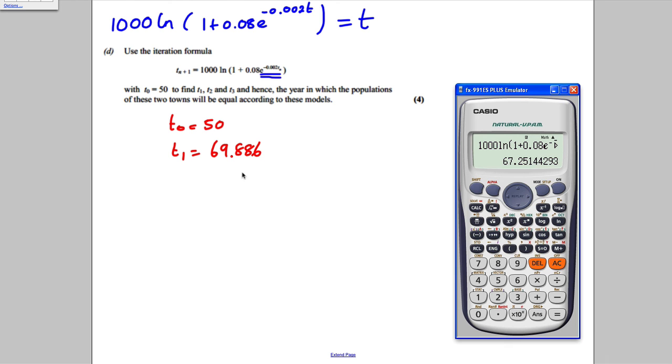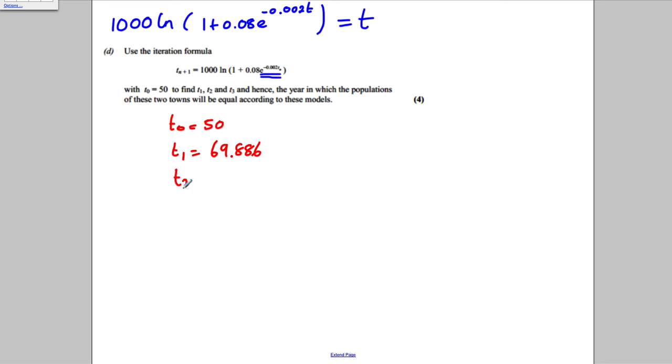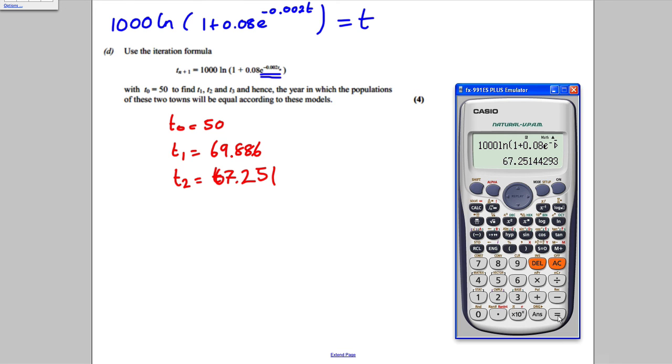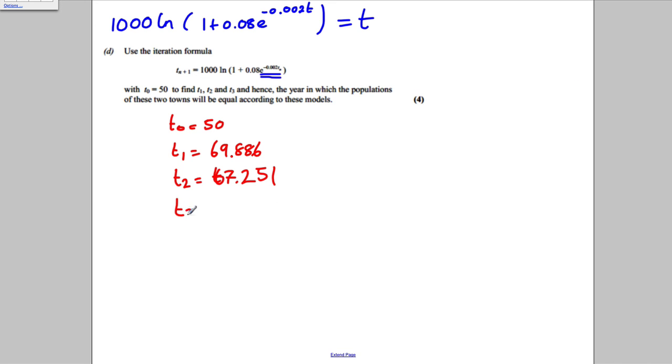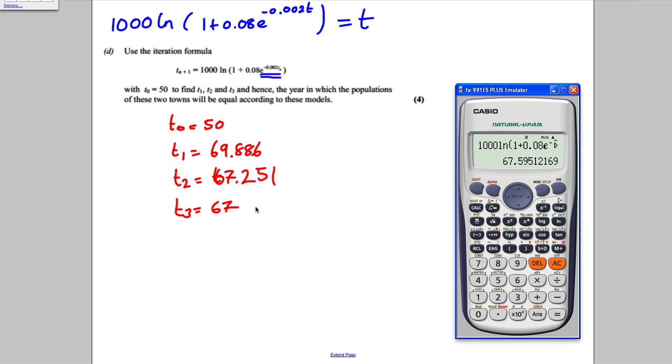Press equals again, 67.251. So T2 equals 67.251. And press equals again for T3. T3 is equal to 67.595.